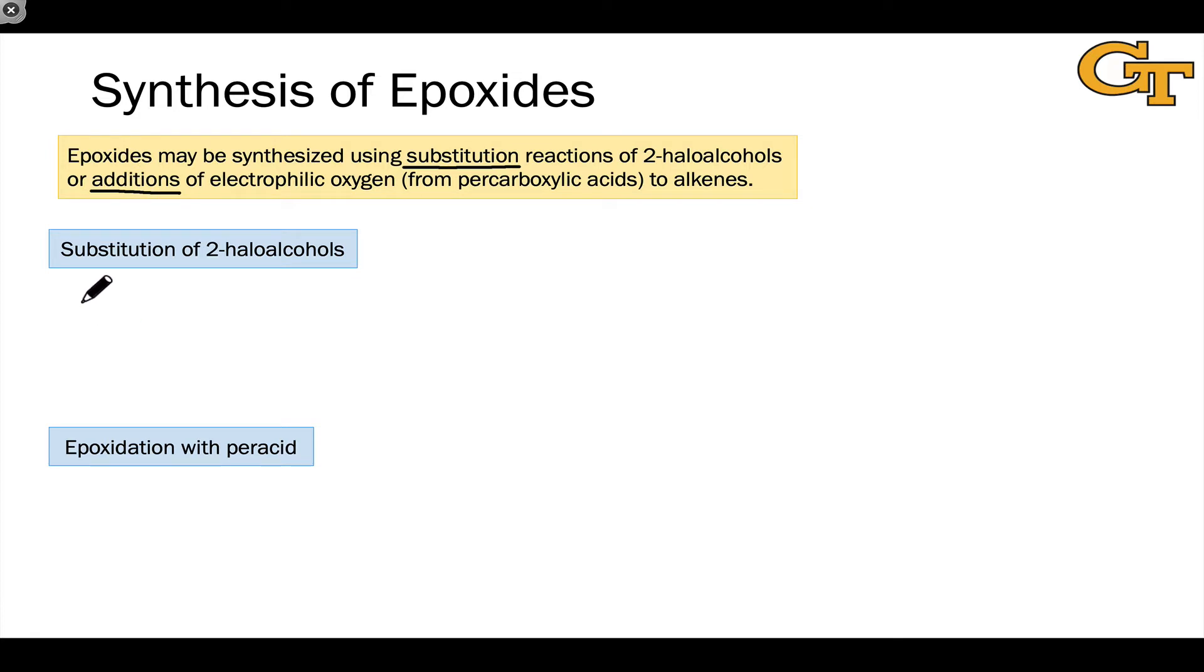The substitution process starts from a compound or starting material in which we already have one of the ether bonds intact, and at the other carbon that's destined to become part of the epoxide, we have a good leaving group. This might be, for example, a halogen. So these 2-haloalcohols with a hydroxyl group linked to a carbon, which is linked to an electrophilic carbon connected to a halogen atom that can serve as a leaving group, are great substrates for the formation of epoxides.